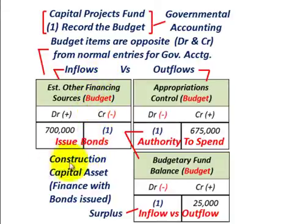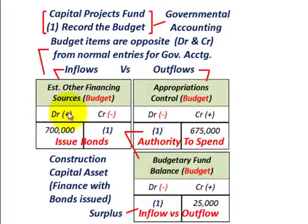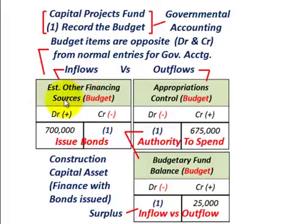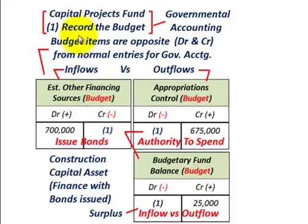The first thing we have to do when constructing this capital asset is look at our capital projects fund and record the budget. I've got the budget items showing here: estimated other financing sources, appropriations, and budgetary fund balance. One important note — in the capital projects budget, the debits and credits have opposite signs compared to regular accounting. For other financing sources here, it's debit plus, credit minus, whereas in regular accounting it would be debit minus, credit plus.